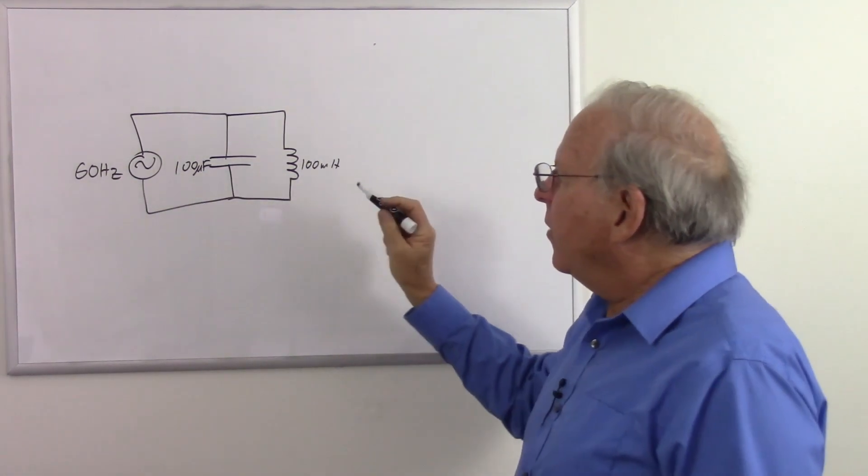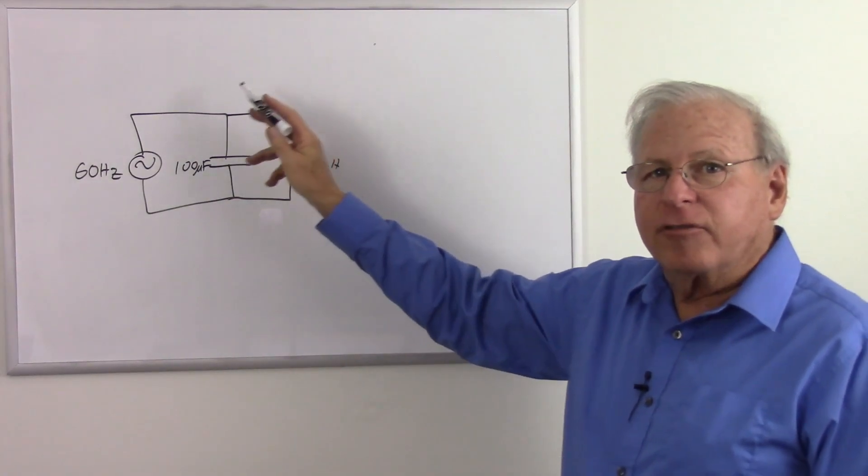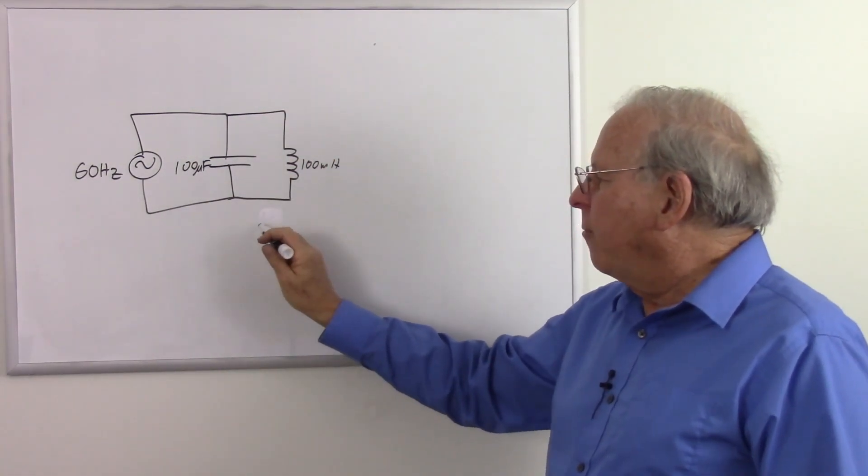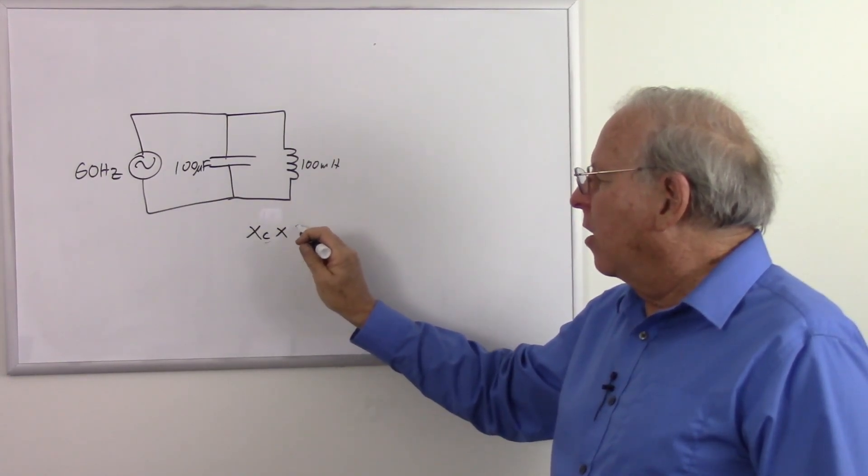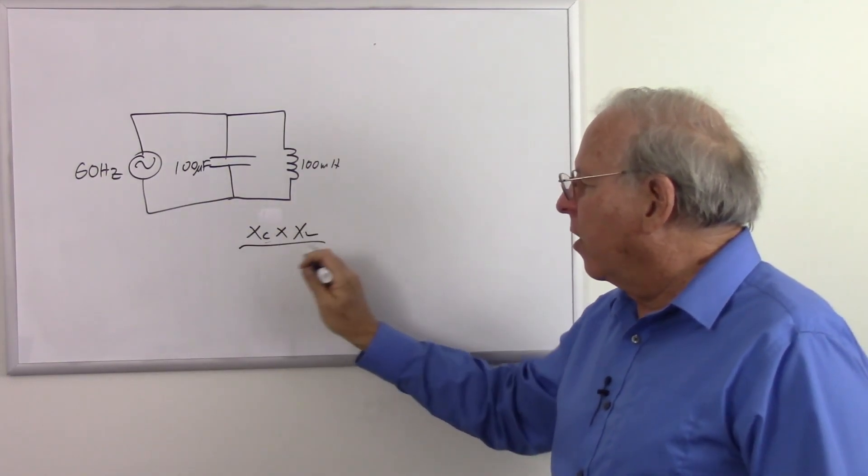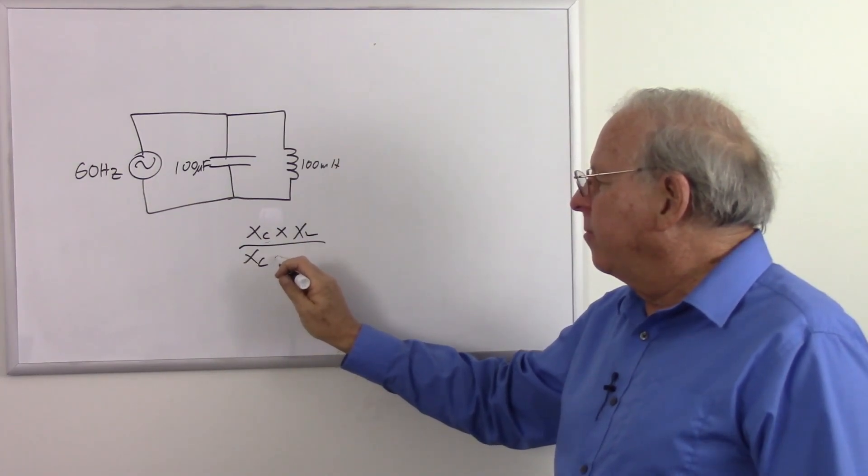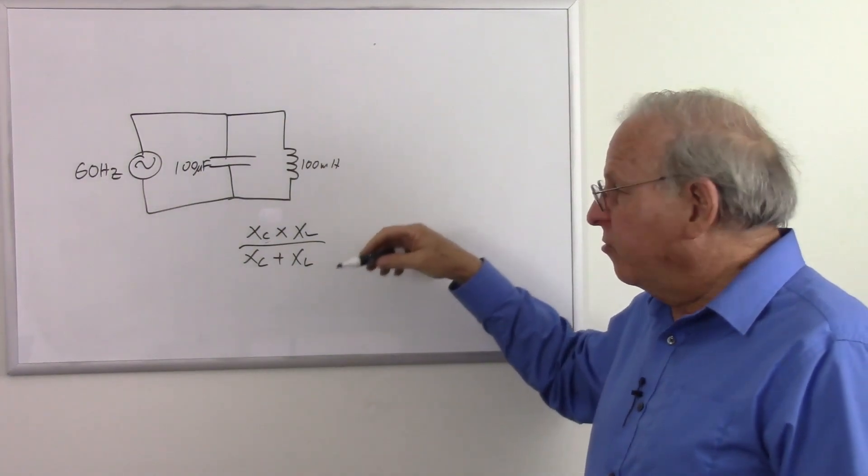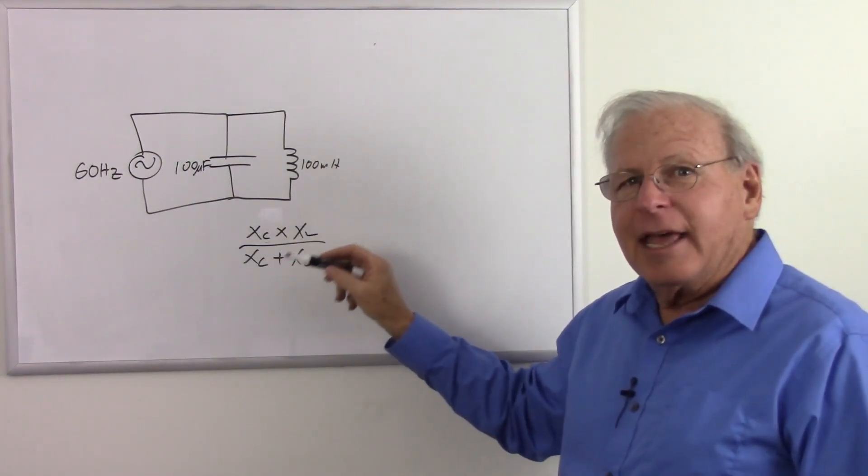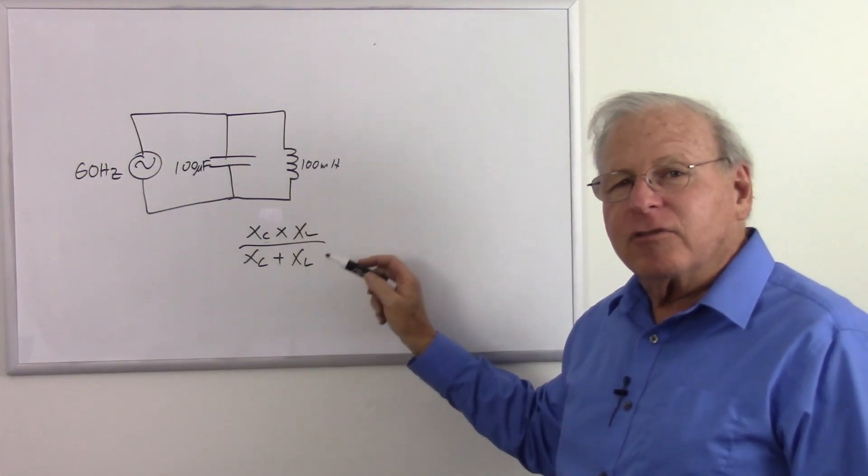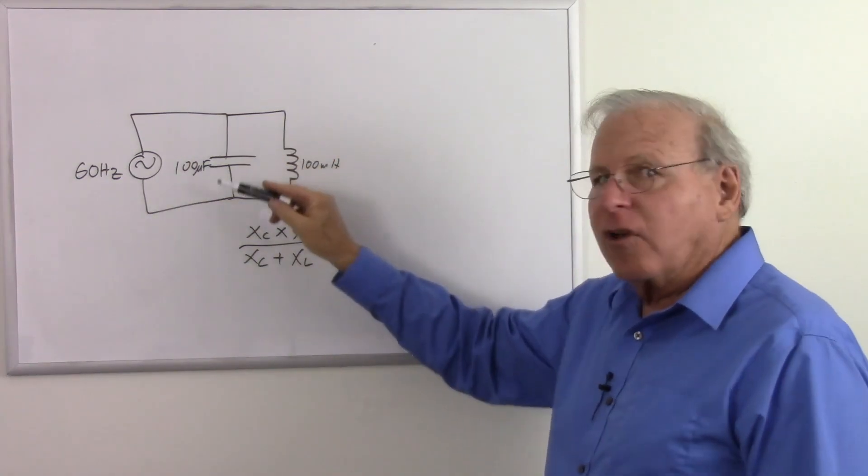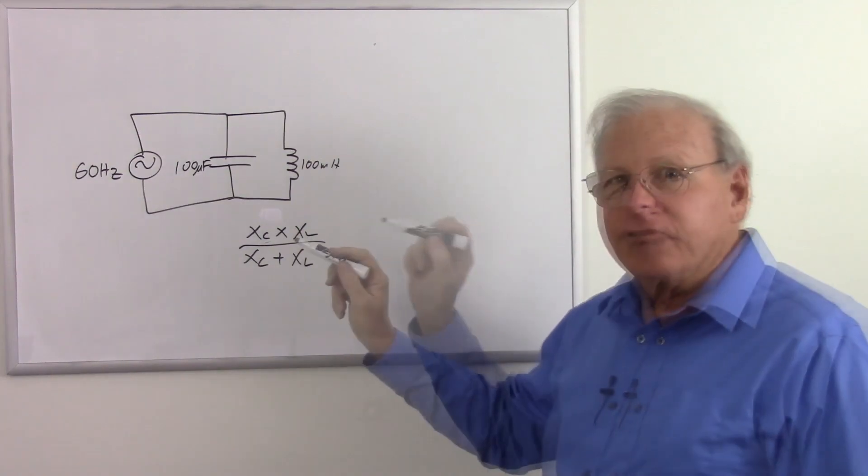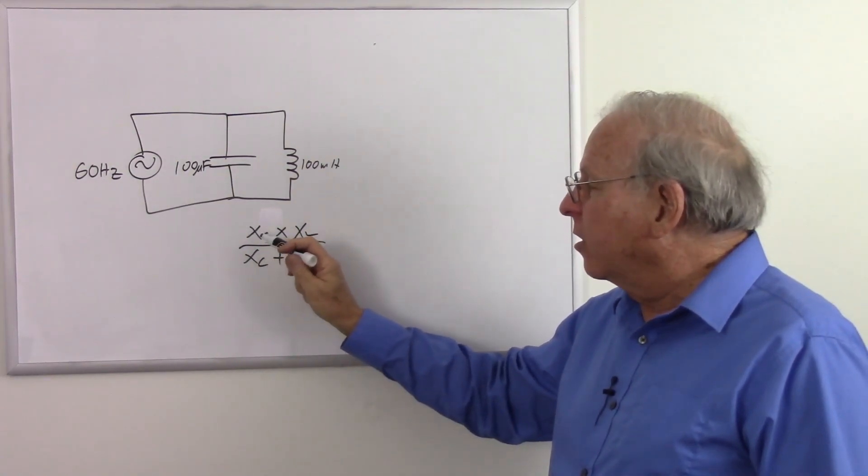So that would be our capacitive reactance times our inductive reactance over our capacitive reactance plus our inductive reactance, and I used rectangular notation, so I was using complex numbers to calculate that. Then I showed that you really don't need to use the complex numbers, because since this is all imaginary numbers, all you have to do is use the imaginary numbers.